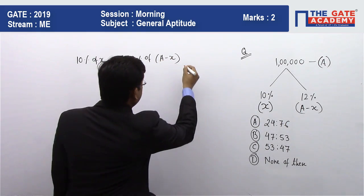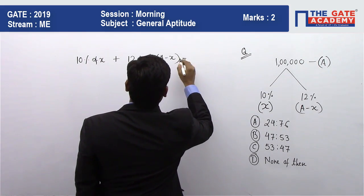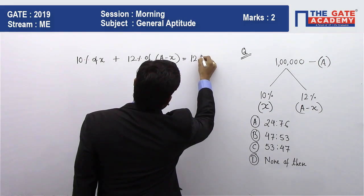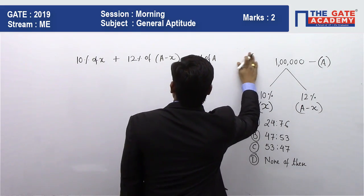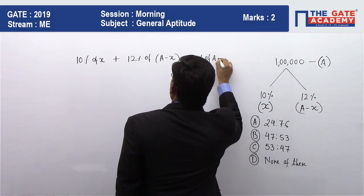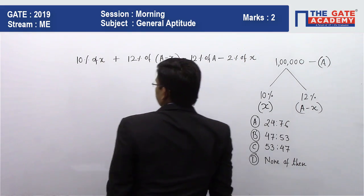If I will simplify this, I will get 12% of A minus 2% of X. This is my case 1.